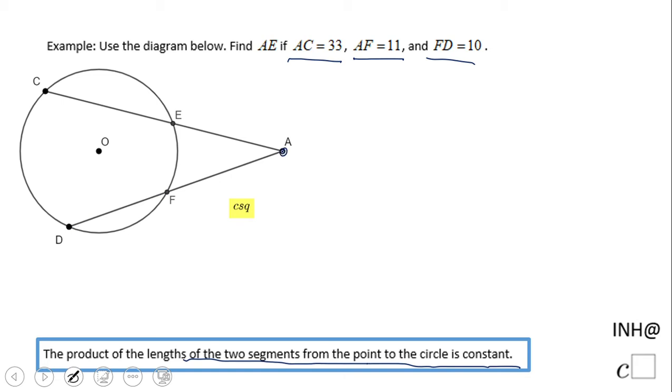Let me show you what it means. So I'm going to start from this point A. This is the point to the circle. We start from A and we're going to have AE times the whole thing. So be careful, AE times AC is a constant. That's what it says.